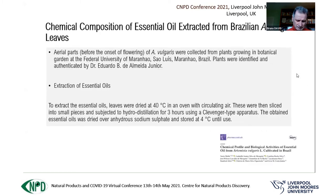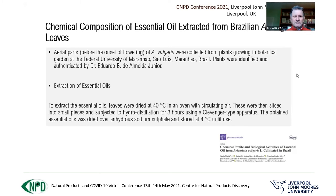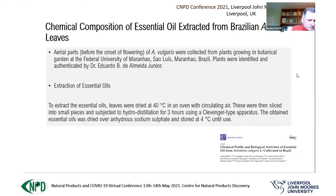We set out to determine the chemical composition of essential oils extracted from Brazilian mugwort aerial parts. Aerial parts of Artemisia vulgaris were collected from plants grown in the botanical garden at Federal University of Maranhão, São Luís, Brazil. The plants were identified and authenticated by a botanist. To extract the oils, the leaves were dried in an oven, chopped into small pieces, and subjected to hydrodistillation for three hours using a Clevenger-type apparatus. The essential oils were then dried over anhydrous sodium sulfate and stored in the refrigerator until use.